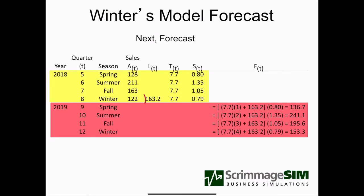With our level, trend, and four seasonal factors for our quarterly data, we can make forecasts. We take our current level plus one period worth of trend to project a regression line forward. Then we adjust that by multiplying the result by 0.8 to adjust it down, because our spring season is a lower-level season, to get our first forecast.